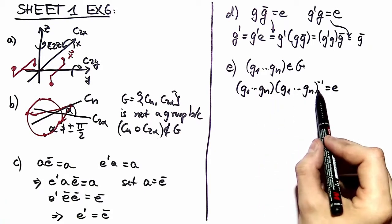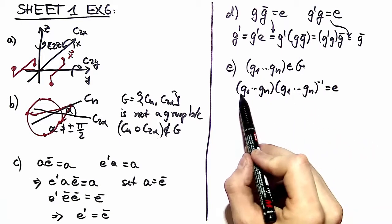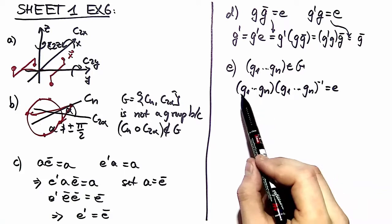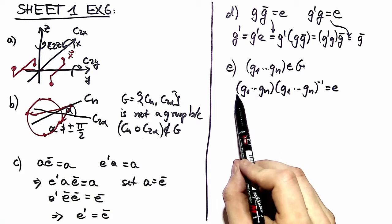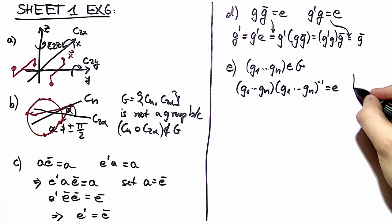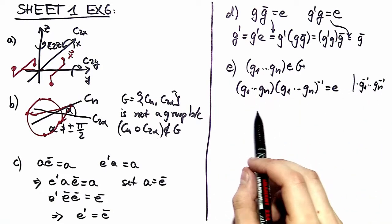We can't open this bracket because this is a new unknown element, but here we are allowed by associativity to open this bracket. When we for example left multiply with g one to the minus one we can extract out an identity. In this way we can extract out many identities, in fact n identities, if we left multiply these elements to this equation.